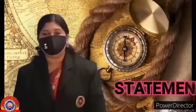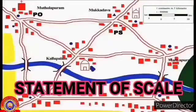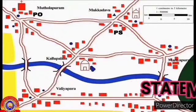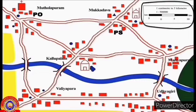Now let's discuss statement of scale in detail. Children, observe the given map. Note the scales shown in this map. We have seen a map 1 cm to 5 km, which means 1 cm in the map is 5 km on the earth. This method is known as statement of scale, which everyone, even a layman, can understand easily.